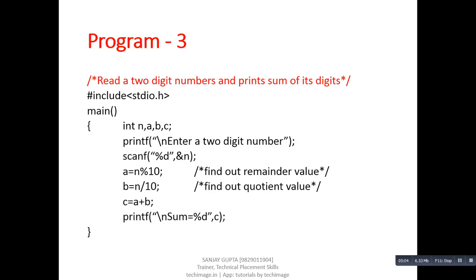Program number three: read a two-digit number and print the sum of its individual digits. In this program we receive a single two-digit number from the user. We use two statements: A equals N modulus 10, and B equals N divided by 10. Modulus gives the remainder and division gives the quotient. For example, suppose N is 12: 12 modulus 10 equals 2, so the value of A will be 2.